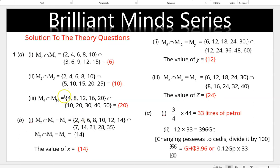The question asks about the first five multiples. M2 intersection M3: the first five multiples of 2 and the first five multiples of 3 — the intersection is 6. M2 intersection M5: the first five multiples intersect at 10. M4 (4, 8, 12, 16, 20) intersection M10 (10, 20, 30, 40, 50) — the intersection is 20.